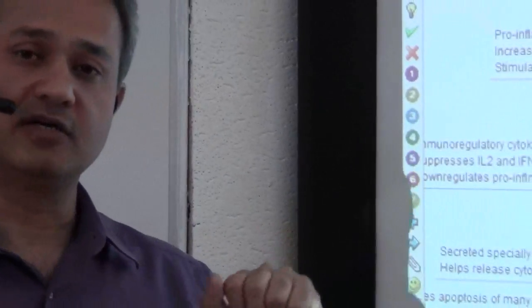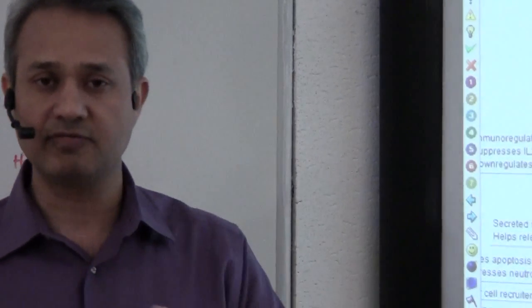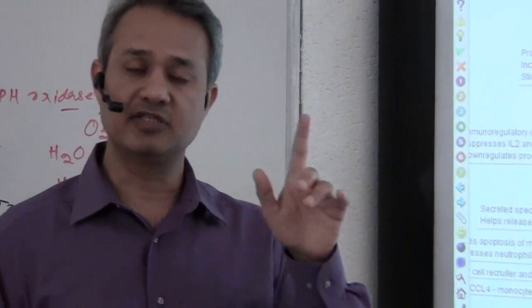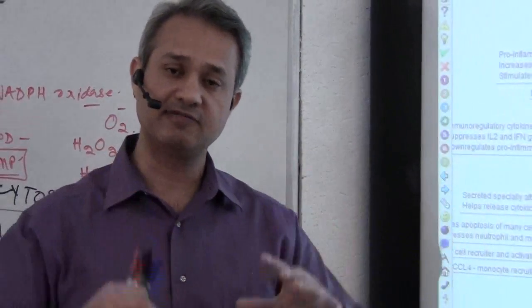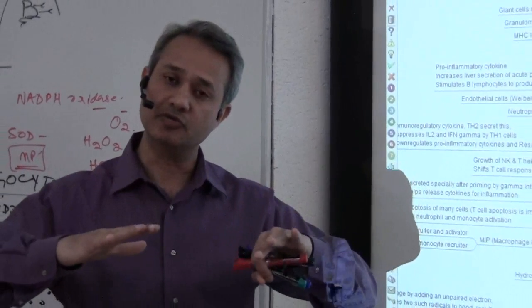TGF-beta is an important chemical factor released from macrophages which is responsible to reduce the activity of the inflammation and to start calming down the immune system.